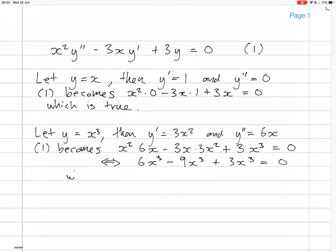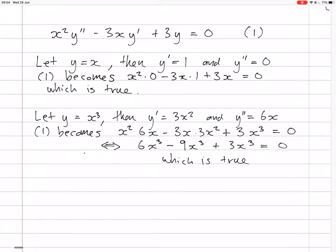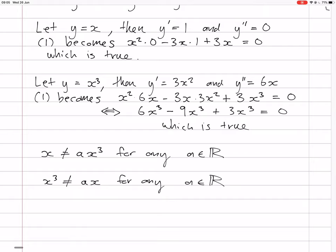Right here. Which is true. So that's also a solution. Okay, so those two things are solutions. And then, that they are linearly independent. To show that, we say that the point is that x is not equal to A x cubed for any scalar. And also the other round. x cubed is not equal to Ax for any A. Okay, so that implies that x, x cubed is linearly independent.